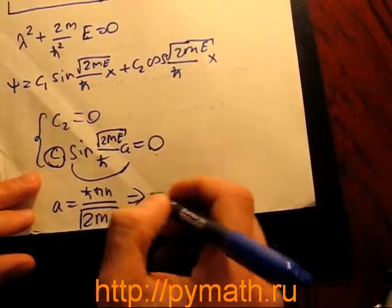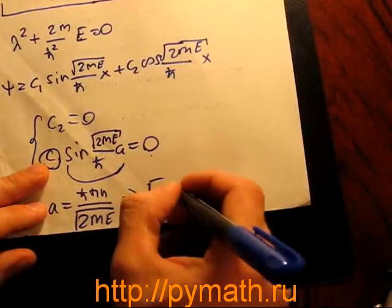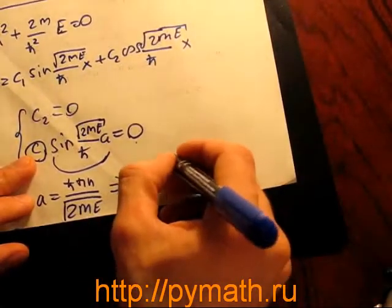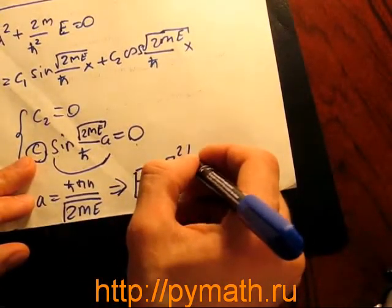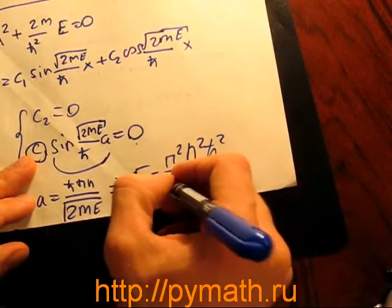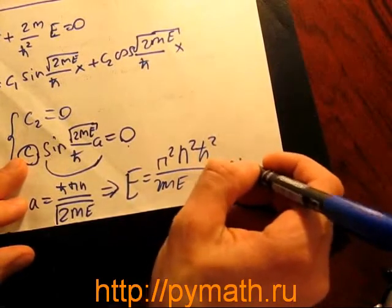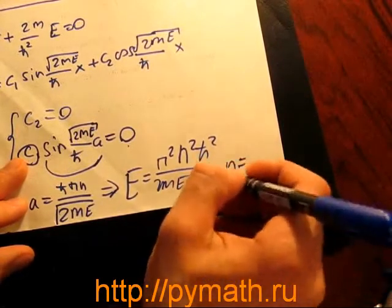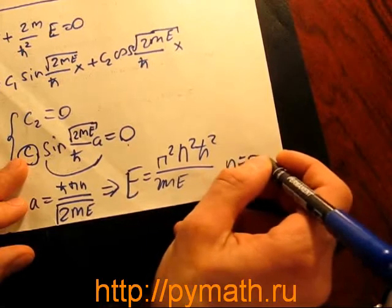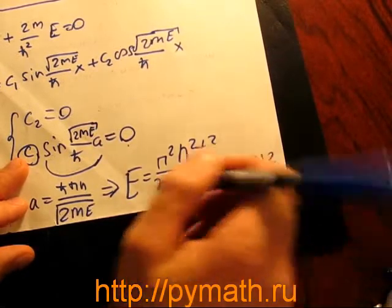It can be shown to be equal to E_n = π²n²ℏ²/(2ma²), where n takes the values 0, 1, 2, 3, etc.